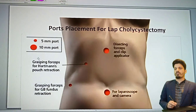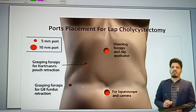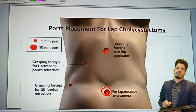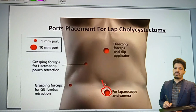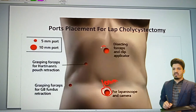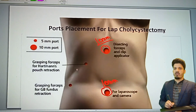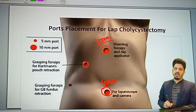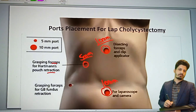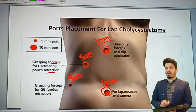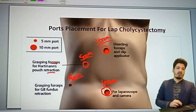In this diagram I am going to show the four ports placed for conventional four-port laparoscopic cholecystectomy. The first port, exactly at this point, is for the laparoscope and camera. Then there is a 10 mm port for the dissecting forcep and clip applicator in the epigastric region. You have two more ports: one 5 mm port for the grasping forcep for Hartmann's pouch retraction, and a fourth 5 mm port for grasping forcep for gallbladder fundus retraction.